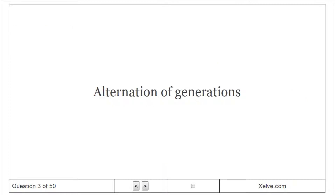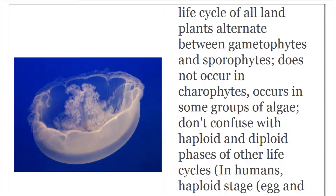Alternation of Generations: The life cycle of all land plants alternates between gametophytes and sporophytes. This does not occur in Charophytes but occurs in some groups of algae. Don't confuse with haploid and diploid phases of other life cycles — in humans, the haploid stage consists of sperm or single-celled gametes.